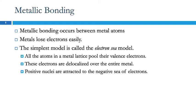The electrons are actually free to move around, and so that's why metals can conduct electricity. We've got this attraction between the positive nuclei and these roaming electrons, and that's what gives us the metallic bonding.